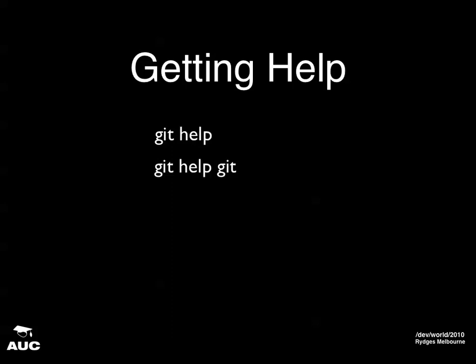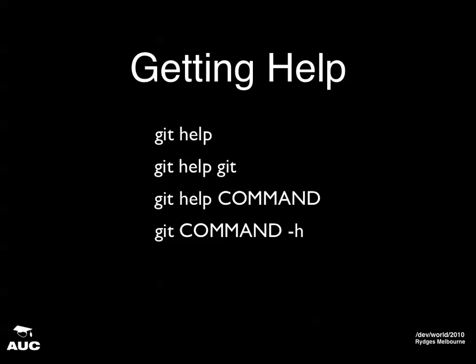The first and most important thing you need to do with any software is get help. 'git help' on its own will give you a list of common commands. 'git help git' — I recommend everyone runs this to get started; it gives you a basic introduction and points you to a couple of other documents. 'git help command' — you'll be doing this a lot; it shows you the manual page for commands, which are extensive and really good. And 'git command -h' will give you the syntax for the command and a list of its command line options.